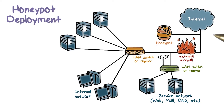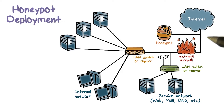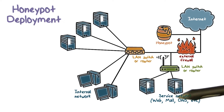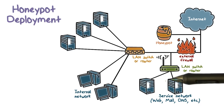Honeypots can be deployed in a variety of locations on a network. A honeypot outside the external firewall is useful for checking attempts to scan or attack the internal network.